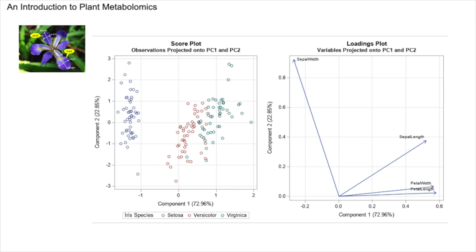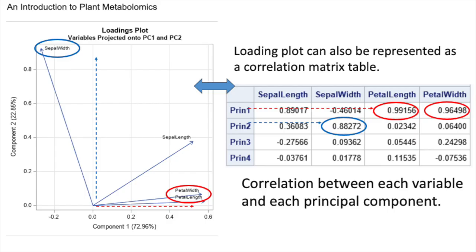Let's bring back the iris dataset. Here are the score and loading plots: different species are separated in the score plot, although not with 100% clear separation. The loading plot shows petal width and petal length related with PC1, separating setosa from versicolor and virginica. A loading plot can also be numerically depicted as a correlation matrix, with rows for variables and columns for principal components — the matrix entries show how strongly each variable correlates with each component. High values mean strong influence; low values mean less.